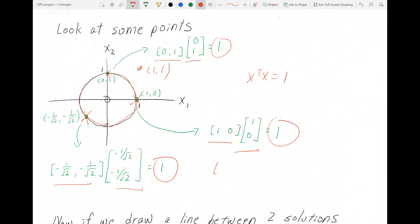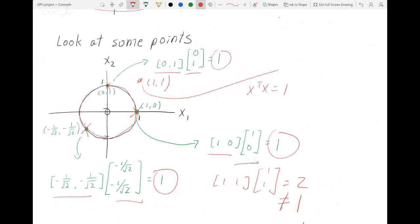If you have (1,1), it would look like (1,1) times (1,1) transpose, which equals 2, which does not equal 1. So this point violates the constraint.